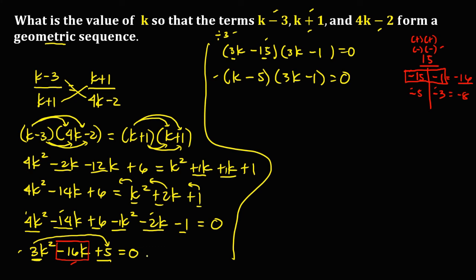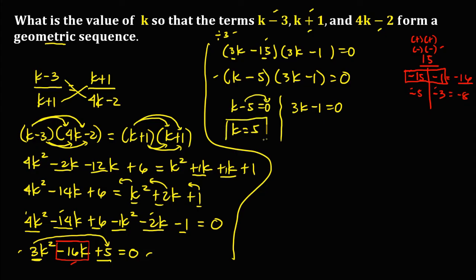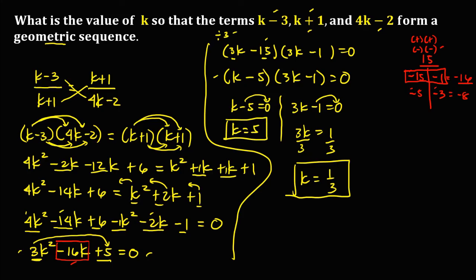To solve for k, we equate each factor to 0. From k minus 5 equals 0, we get k equals 5. From 3k minus 1 equals 0, transposing gives 3k equals 1, then dividing both sides by 3, k equals 1 over 3. So these are the values of k such that the terms k minus 3, k plus 1, and 4k minus 2 form a geometric sequence: k equals 5, and k equals 1 over 3.